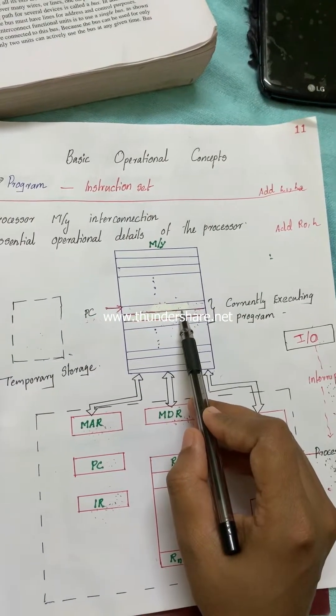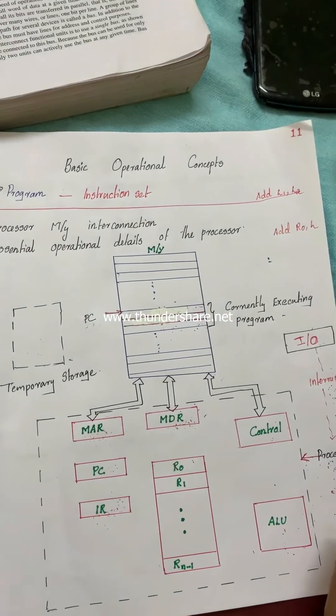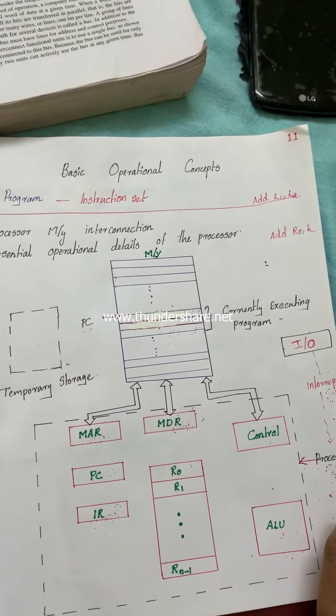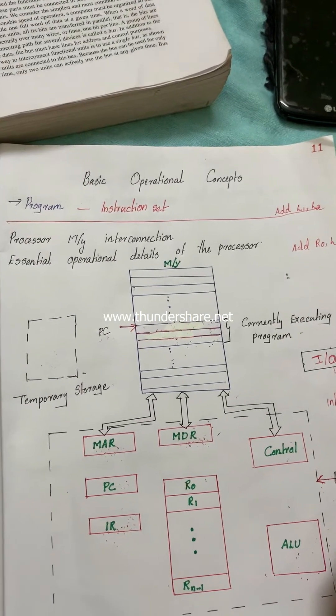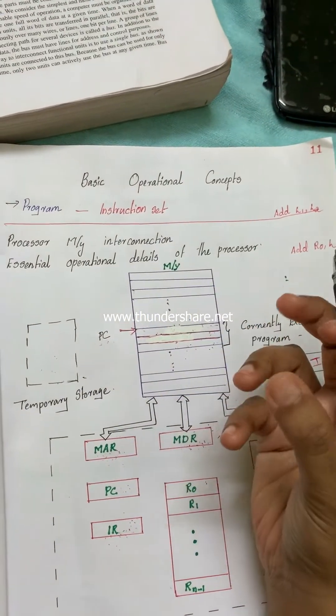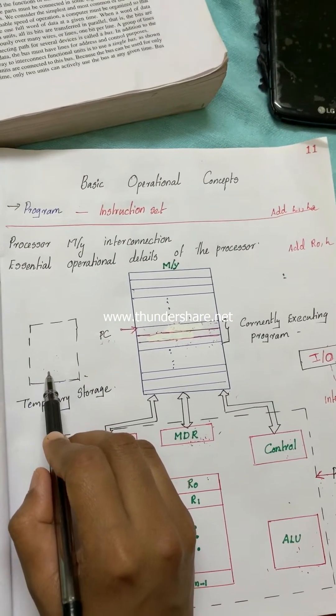The status information includes the values in the general purpose registers and mainly the value of the program counter. All this information is collected together and stored into a temporary storage space.